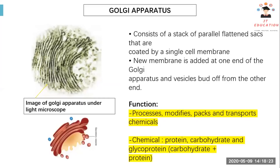Next we have the Golgi apparatus. The Golgi apparatus looks rather unusual — it's just like layers of membranes stacked together. The Golgi apparatus is very important because it helps to process, modify, pack, and transport chemicals. Whatever our body makes also relies on the Golgi apparatus to transport throughout the cells, whether to other cells or for our own cell's use.